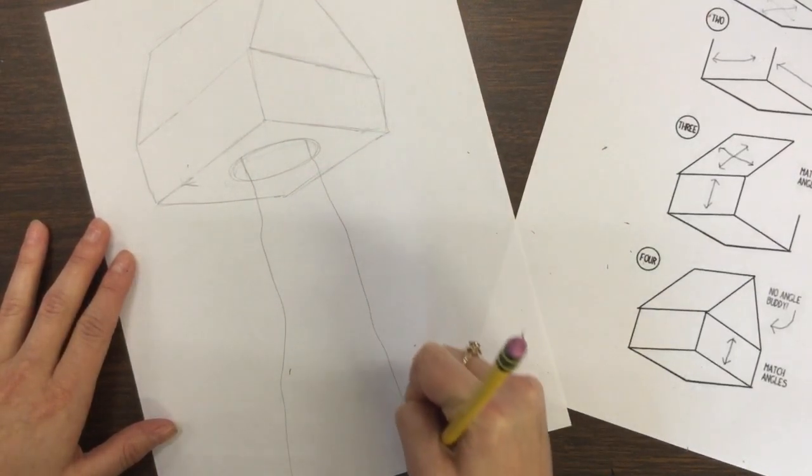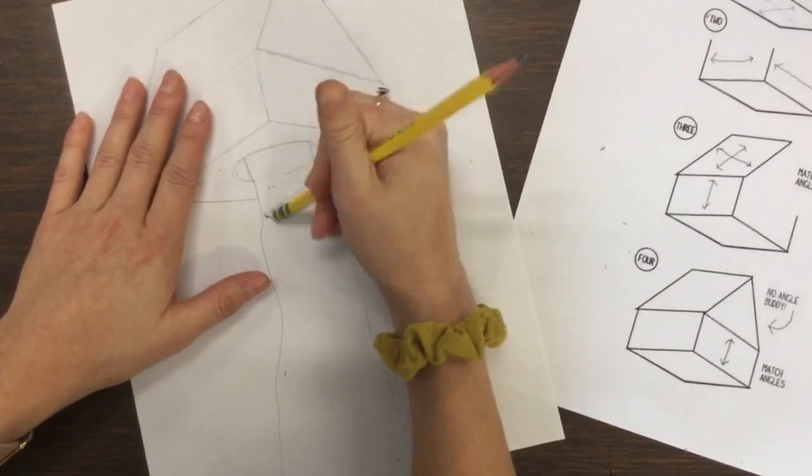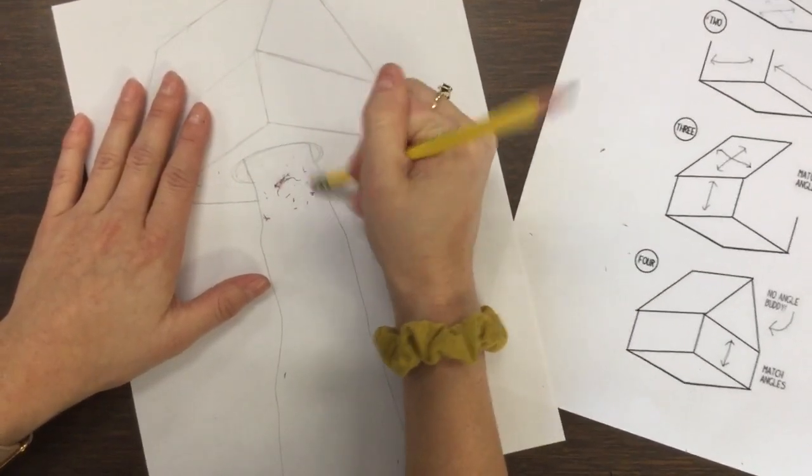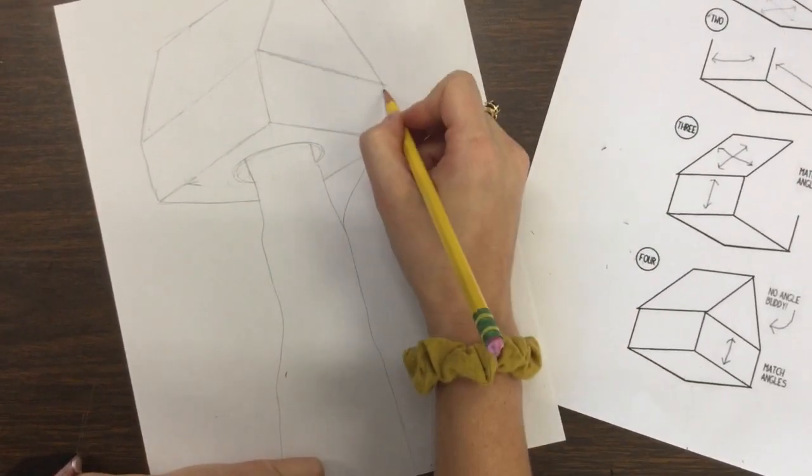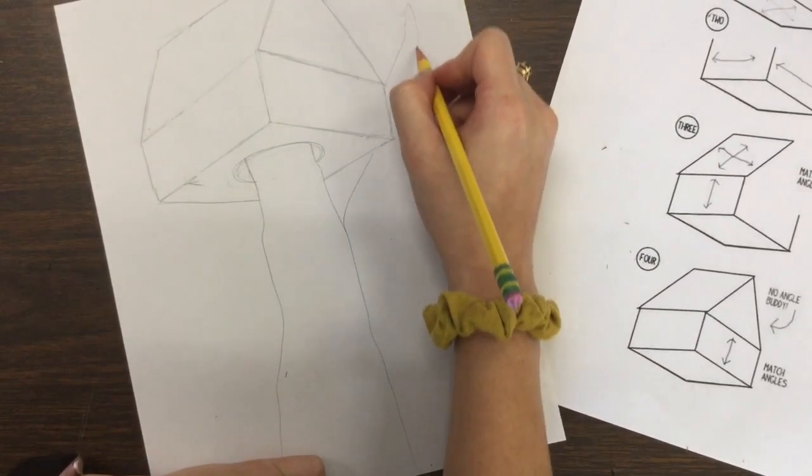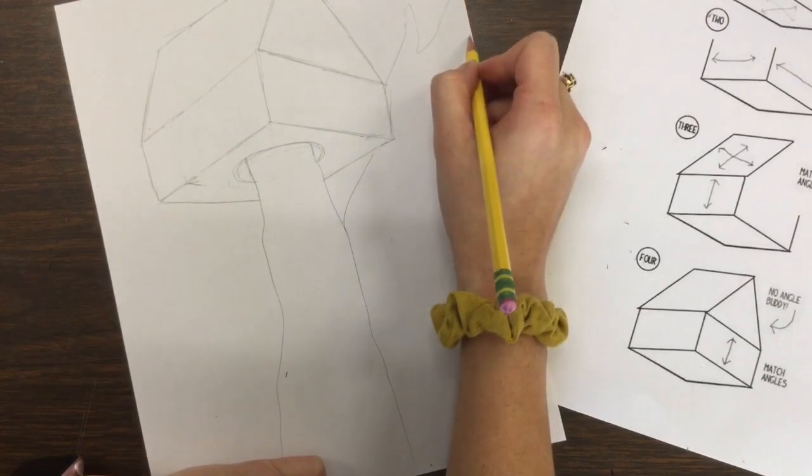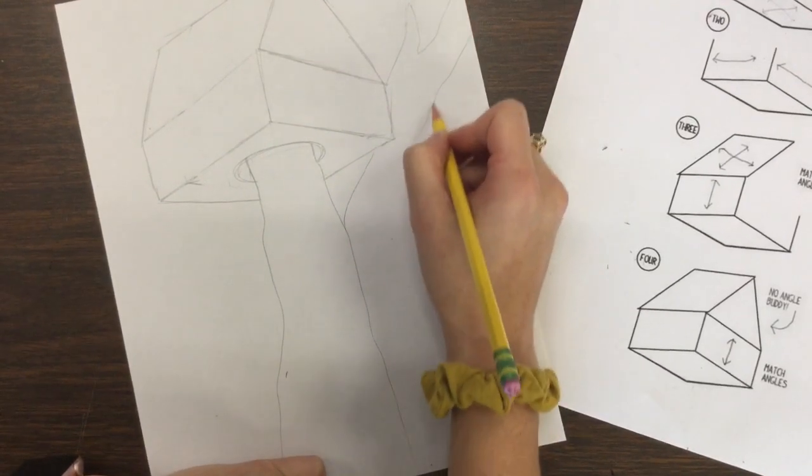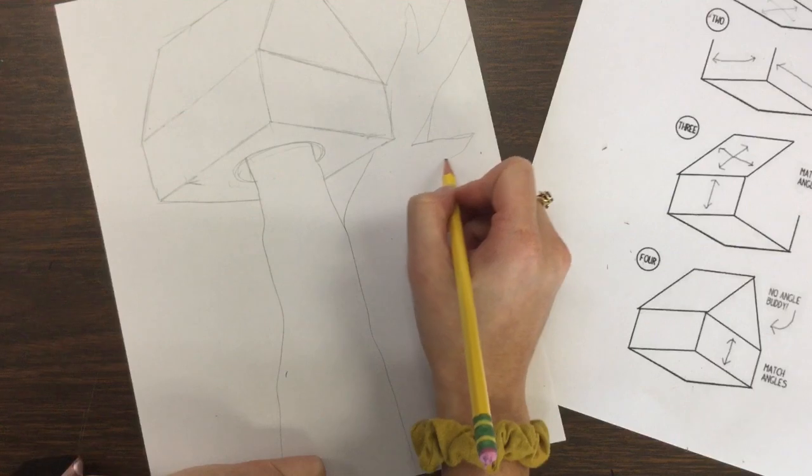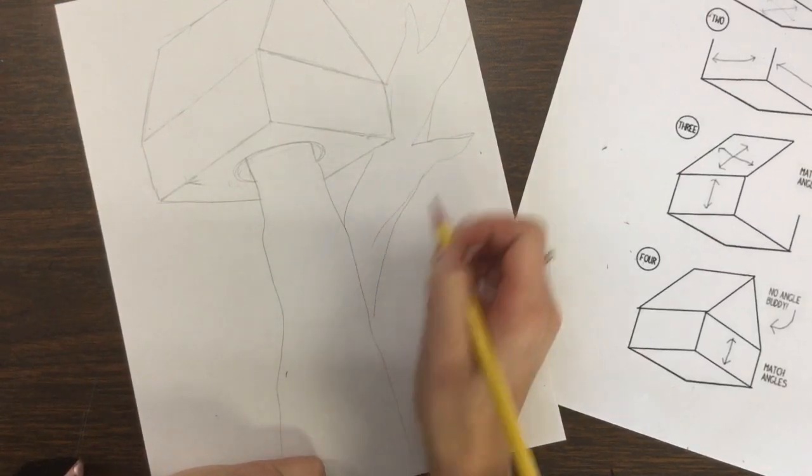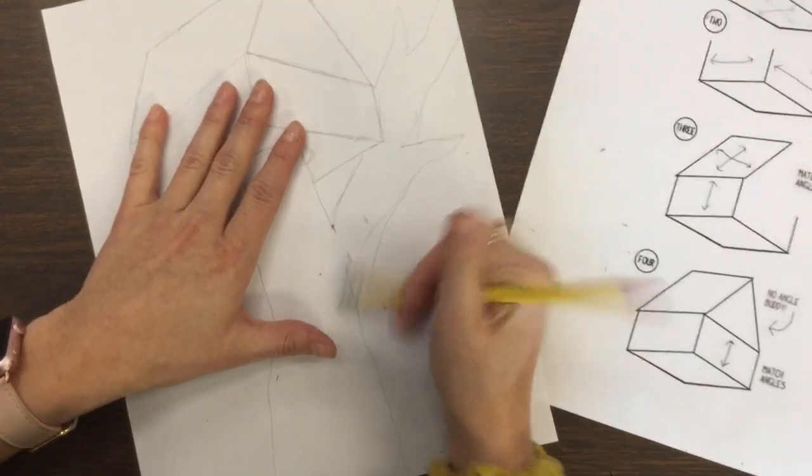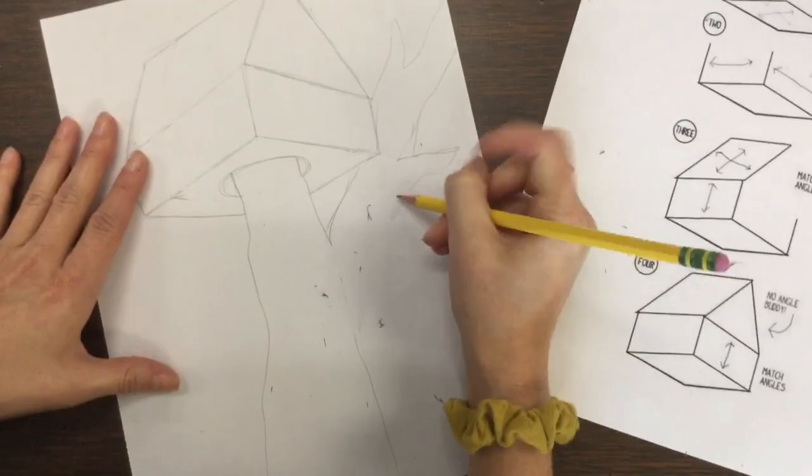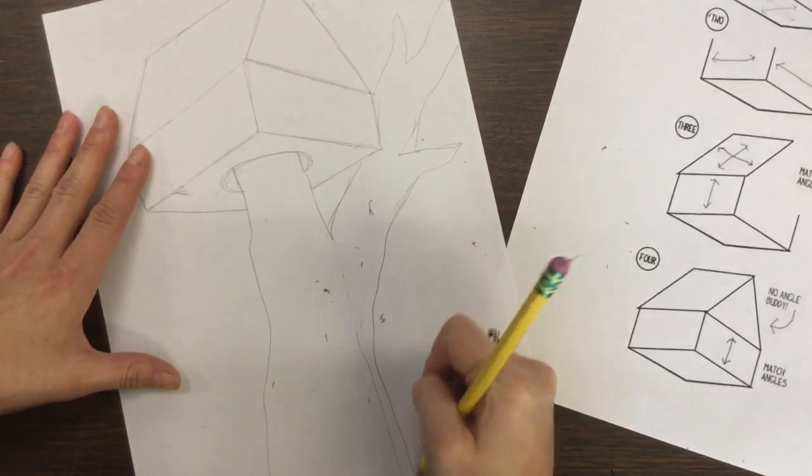And our tree is overlapping. So I'm going to erase the extra what would be behind the tree. And I can add all these different branches coming out. However you want. Make it look interesting. Let me make it bigger down there.